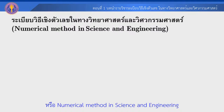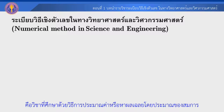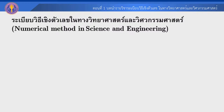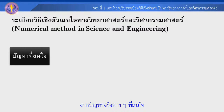วิธีเชิงตัวเลขในทางวิทยาศาสตร์และวิศวกรรมศาสตร์ หรือ Numerical Methods in Science and Engineering คือวิชาที่ศึกษาโดยวิธีการประมาณค่า หรือหาผลเฉลยโดยประมาณของสมการ หรือปริมาณต่างๆ ในปัญหาทางด้านวิทยาศาสตร์และวิศวกรรม จากปัญหาจริงต่างๆ ที่สนใจ